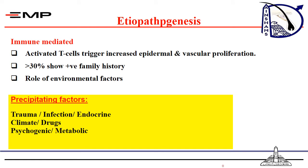The etiopathogenesis of psoriasis is complex, with an interplay between many factors — mainly genetic, immunological, and environmental. The disease is immune-mediated, with an activated T-cell trigger that increases epidermal and vascular proliferation; the epidermal proliferation is increased to about more than 20 times the normal. Most patients have a positive family history, and environmental factors like pollution, smoking, and viral infections can precipitate the disease.